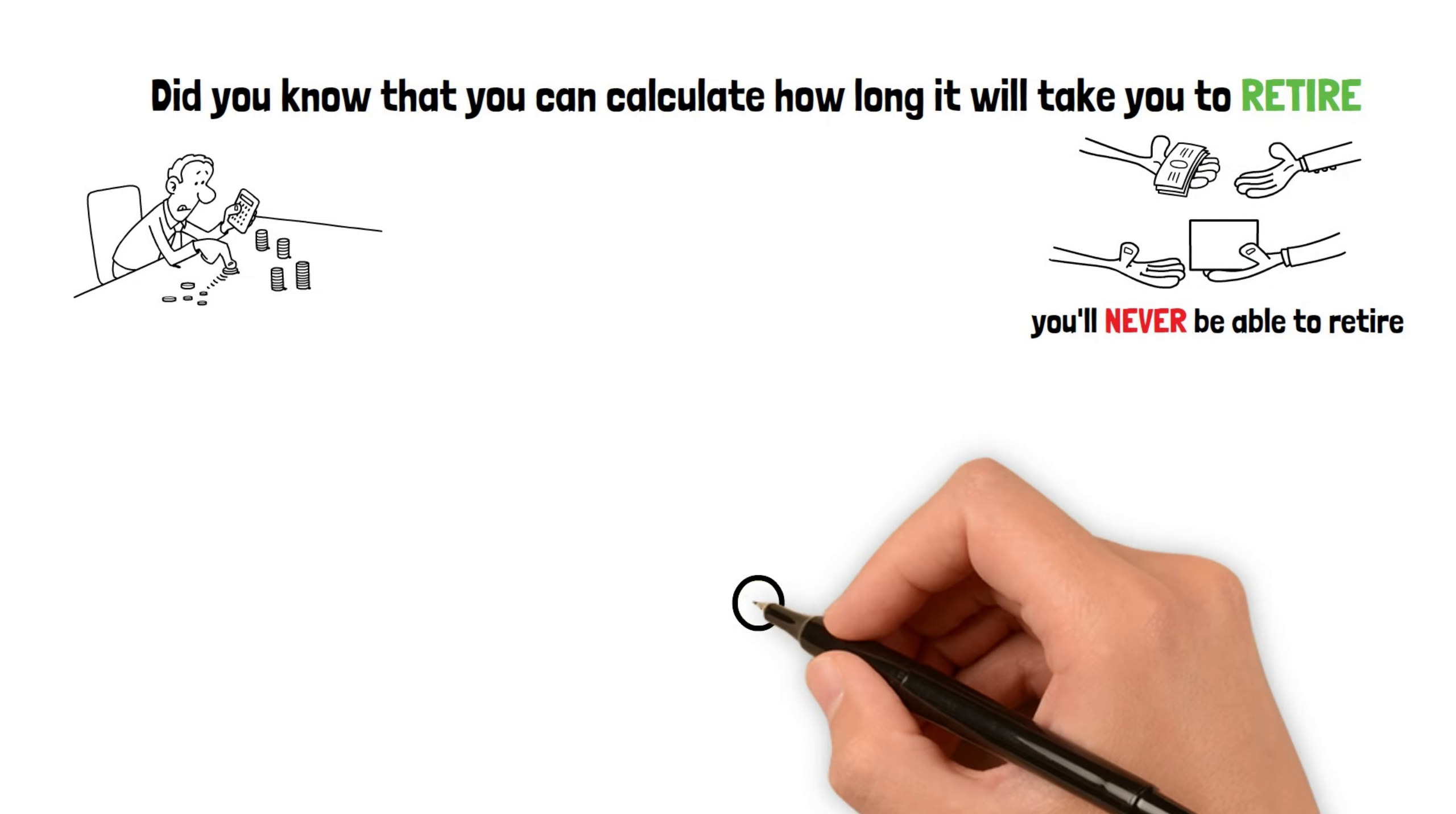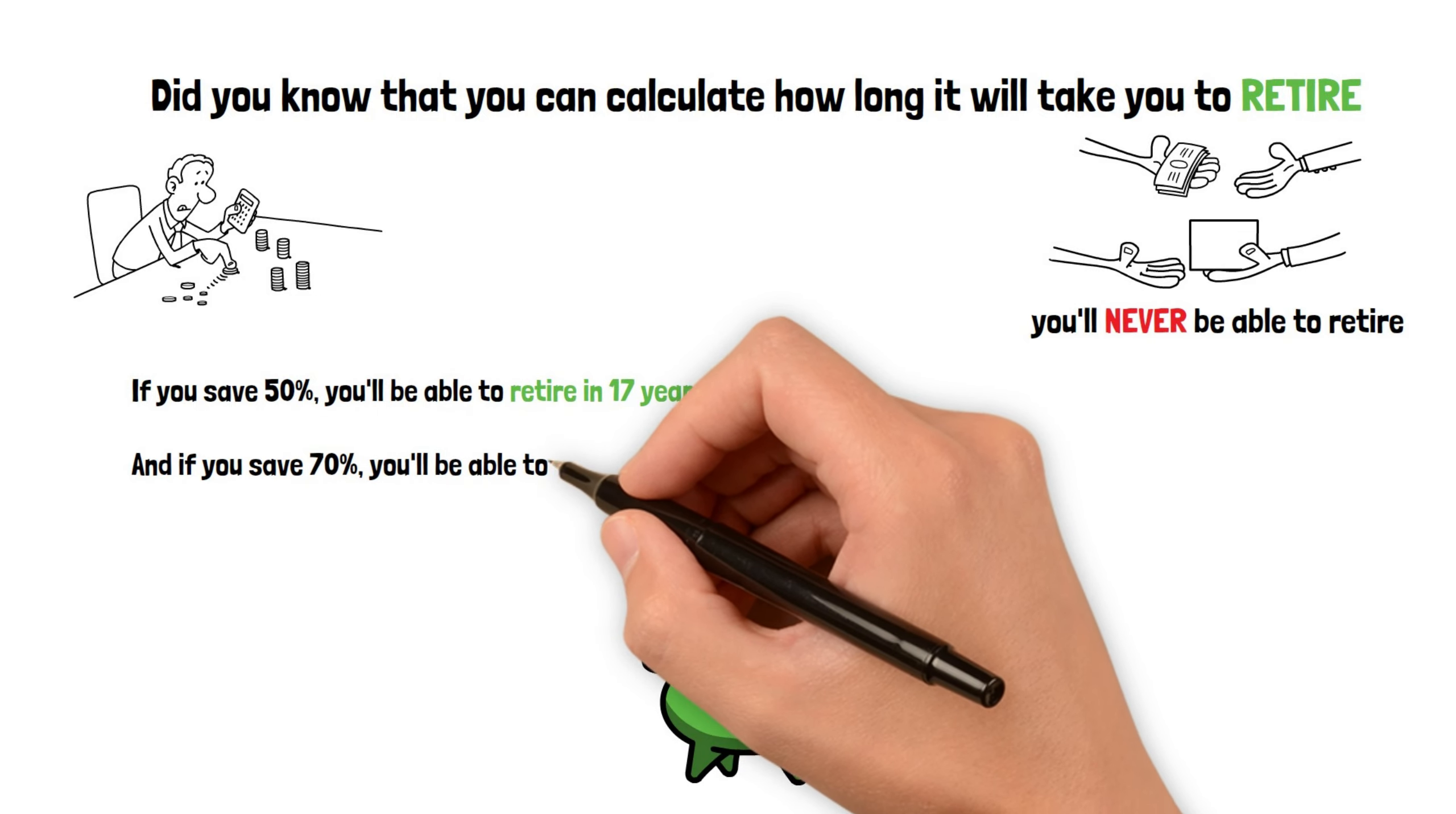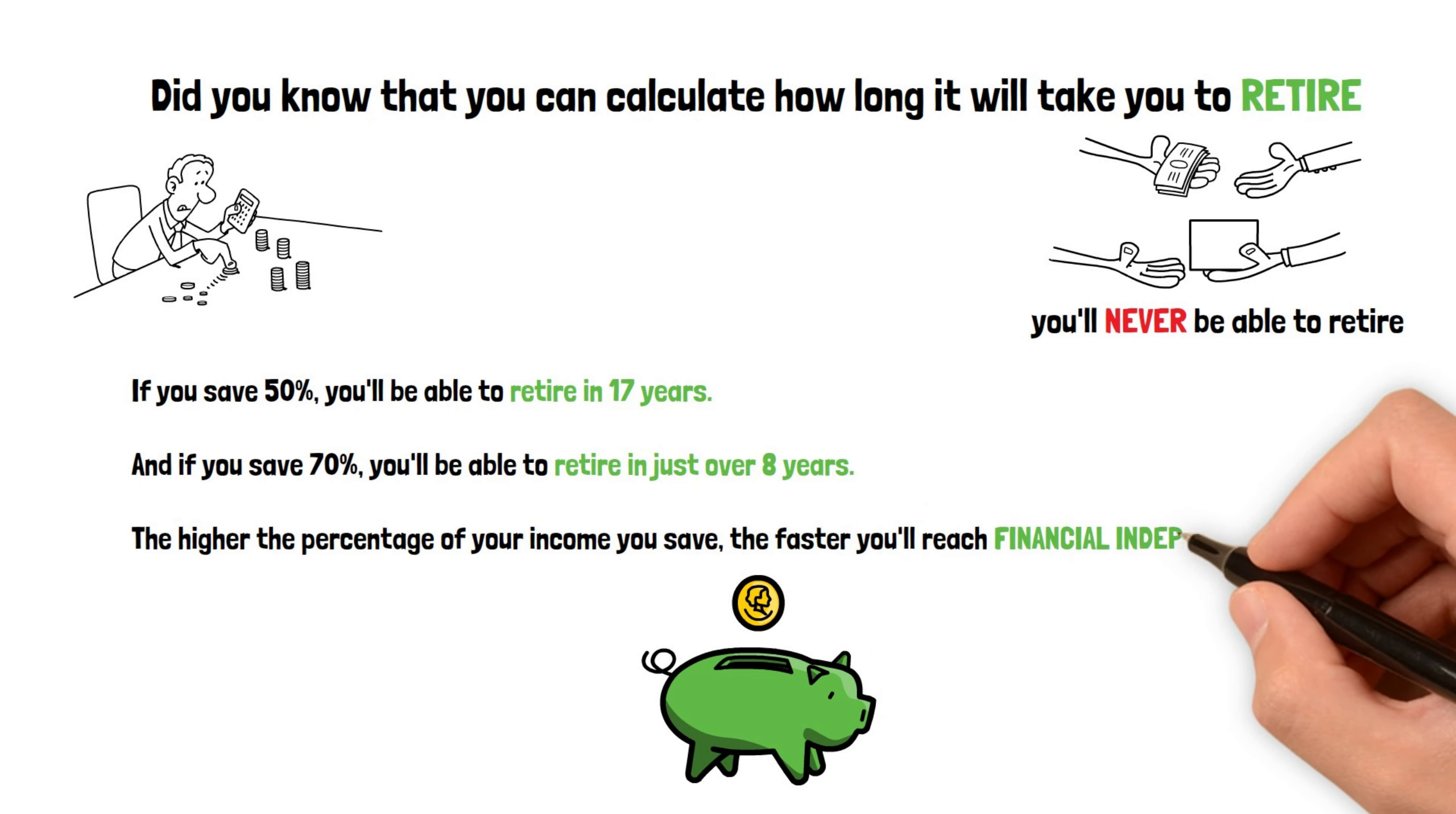But if you save 25% of your income, you'll be able to retire in 32 years while maintaining your current lifestyle. If you save 50%, you'll be able to retire in 17 years. And if you save 70%, you'll be able to retire in just over 8 years. The higher the percentage of your income you save, the faster you'll reach financial independence.